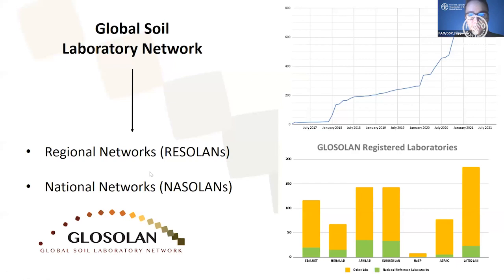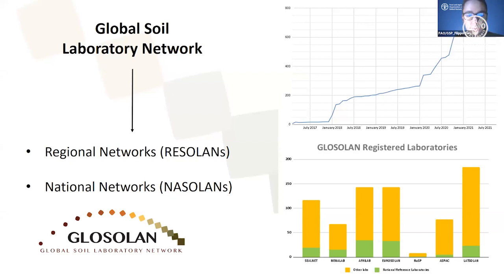GLOSOLAN is a global network grouping together soil laboratories worldwide, structured in different regions with several regional networks. We have SEAL Net for Asia, NINALAB for Near East and North Africa, Afrilab for African laboratories, Eurosolan for Europe and Eurasia, ASPAC for the Pacific region, and LATSOLAN for Latin America and the Caribbean. We are also working with countries to establish national laboratory networks.